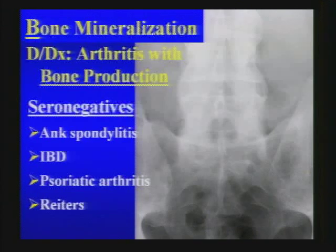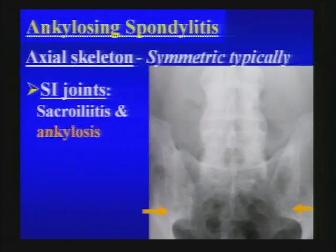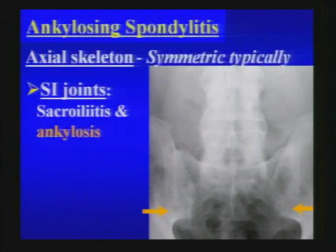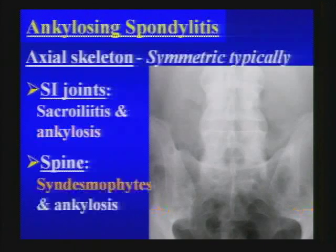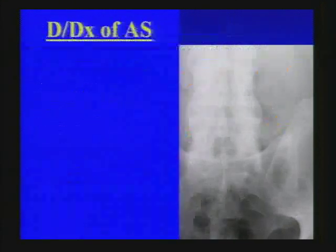With ankylosing spondylitis in the axial skeleton, we typically see symmetric involvement. At the SI joints, sacroiliitis can progress to ankylosis. In the spine, look for delicate, symmetric syndesmophytes — areas of ossification in the annulus fibrosus — often causing ankylosis.